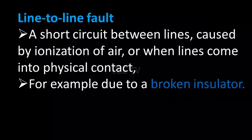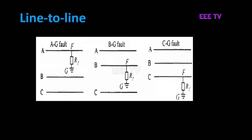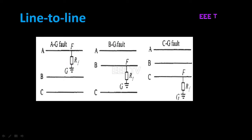Line to line fault — also called a phase to phase fault. For example, when an insulator is broken, the two lines make contact. A line to line fault occurs when two lines are connected, such as B to C or C to A.